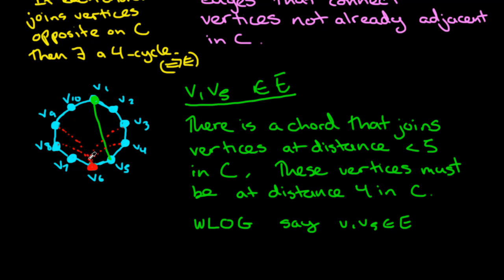Similarly, if we were to not have that but to have V6, V2 as a chord, we again have a 4 cycle and it is formed between V1, V2, V6, V5 and back. So in either case, we form a 4 cycle and that's again a contradiction.